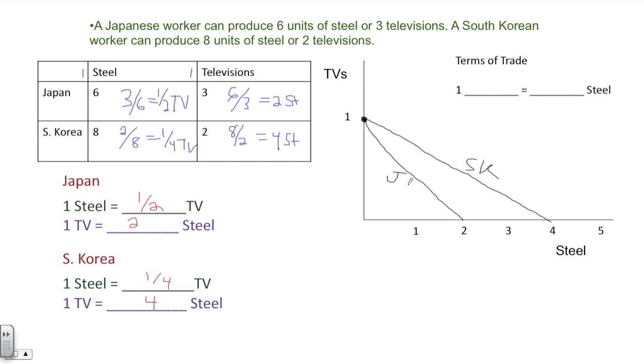Now the rule of thumb here is that trade must occur between these two opportunity costs for this to make sense. So because we have a nice clean number of two and four as our opportunity cost, we'll take and use three as the term of trade. In other words, one TV must be traded for something in between two and four. In this case, we'll take three steel.